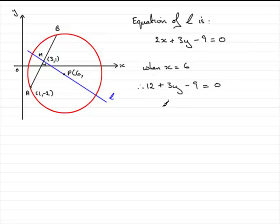12 minus 9 is 3, so you've got 3y plus 3 equals 0.